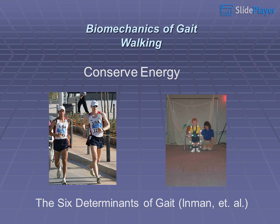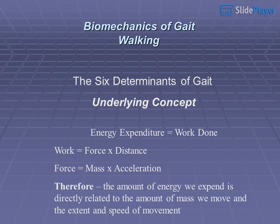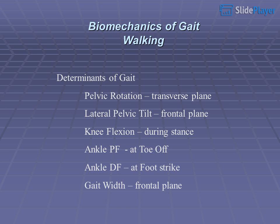Conserving energy: the six determinants of gait by Inman et al. The underlying concept is that energy expenditure equals work done; work equals force times distance; force equals mass times acceleration. Therefore, the amount of energy we expend is directly related to the amount of mass we move and the extent and speed of movement.